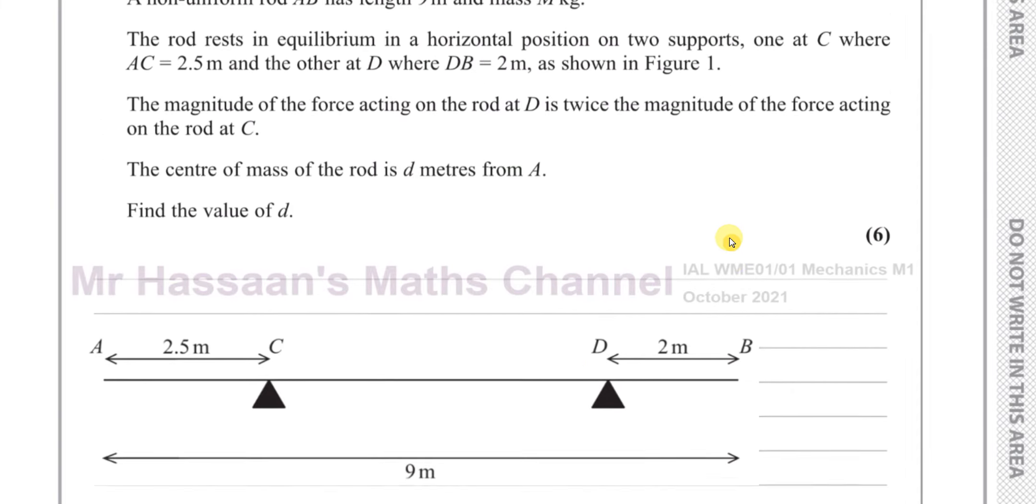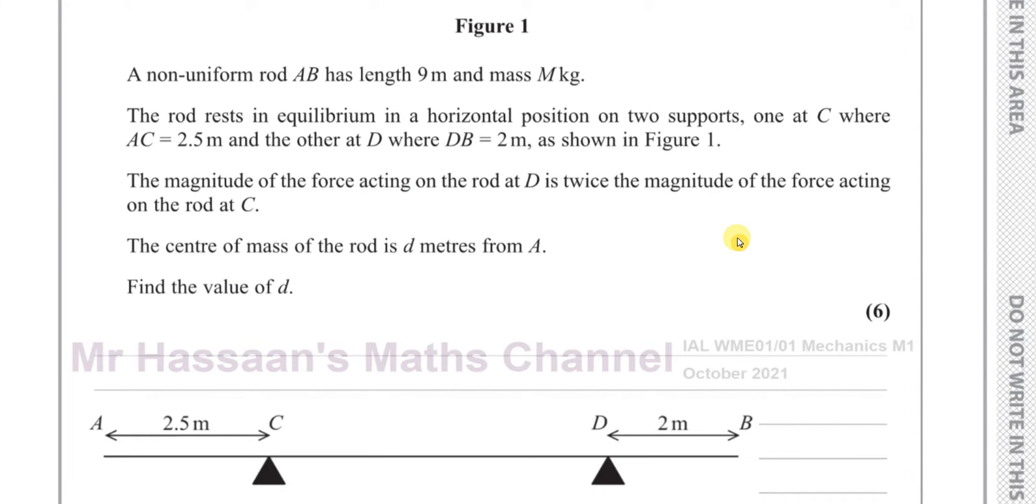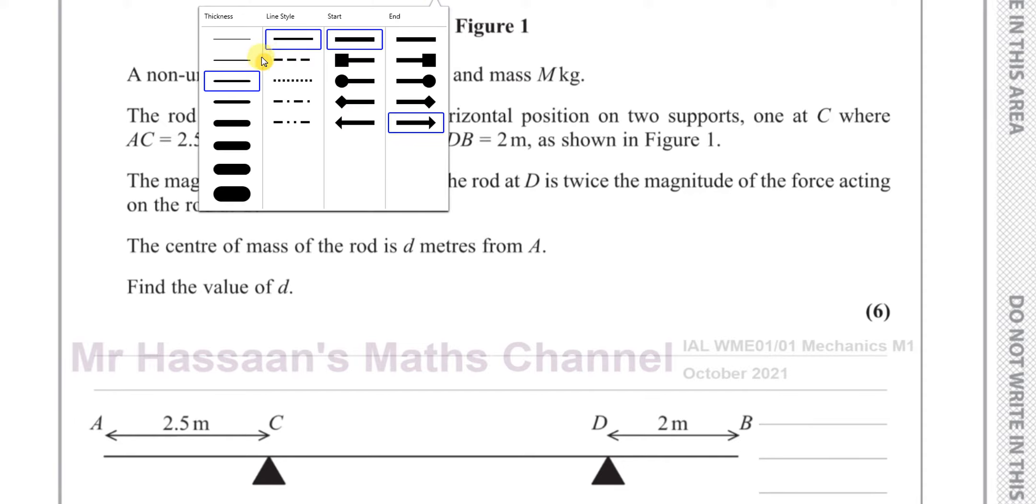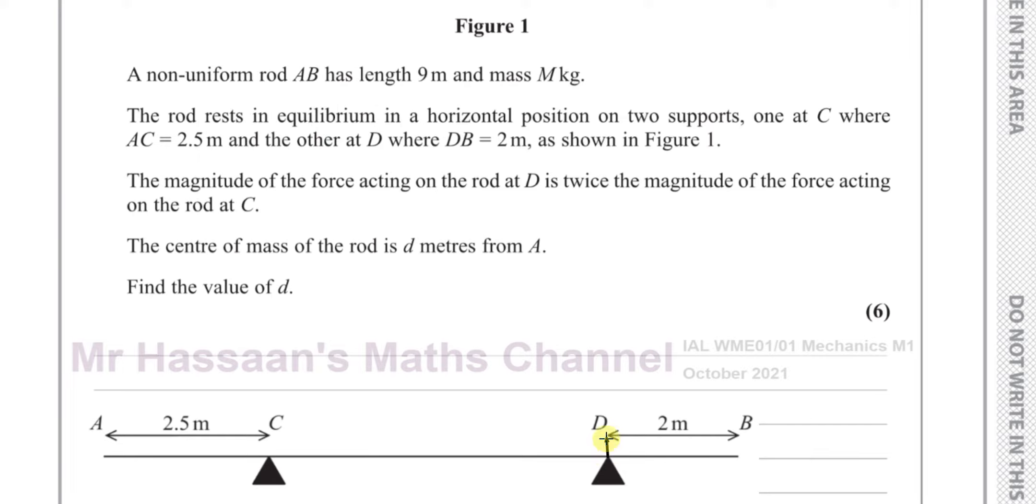Now what we know so far is the supports. There are forces acting from the support at C and D. We don't know their values but we know in relation to each other what those forces are. So it tells us that the magnitude of the force acting on the rod at D is twice that acting at C.